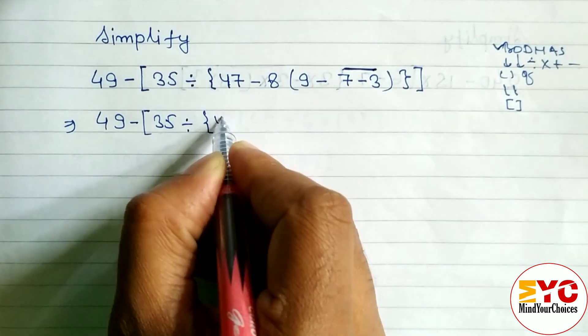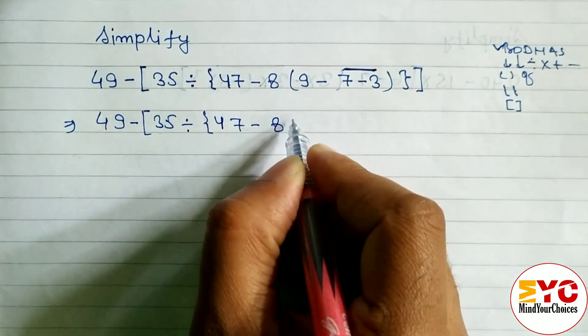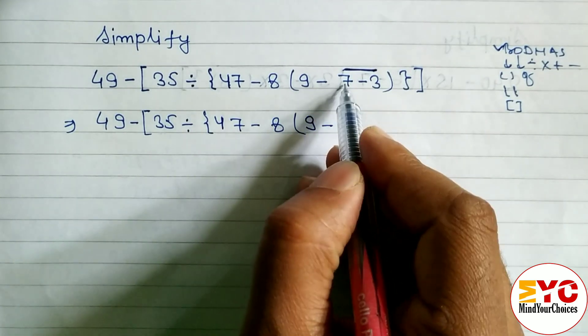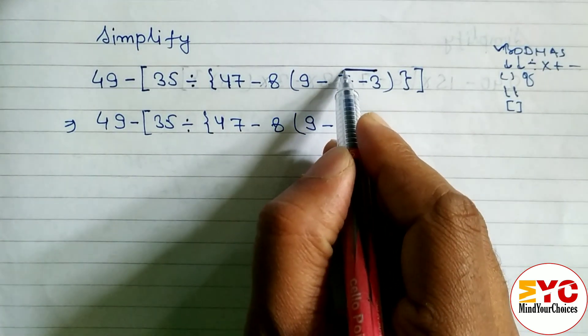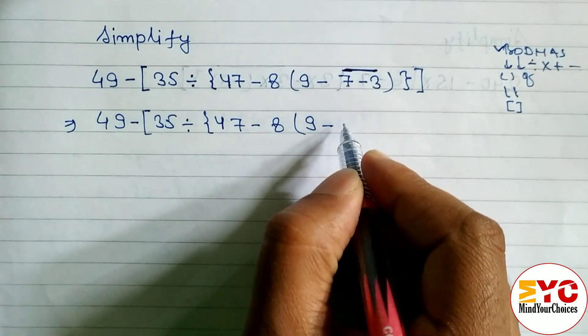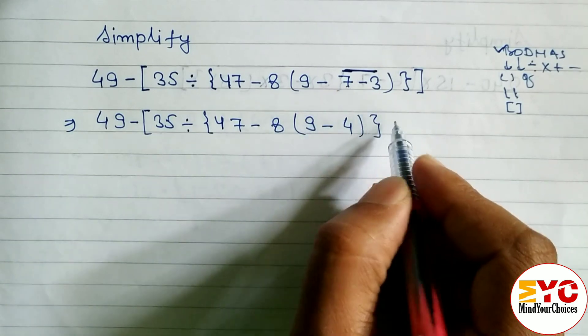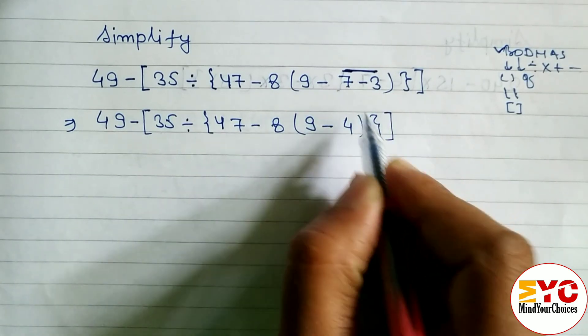We have to write 47 minus 8, we have to write 9 minus... this bar goes from 7 to 3, so 7 minus 3 means 4. We have to write down 4. Don't write minus 7 minus 3, it will be a mistake. Don't use this minus sign.